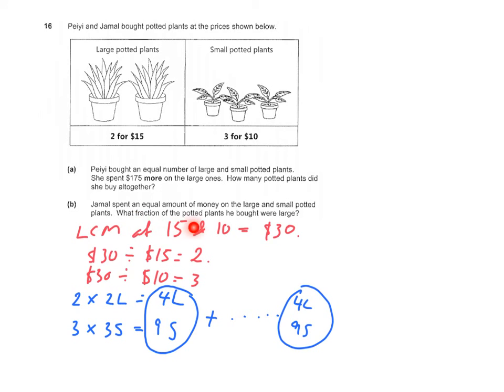So the fraction of potted plants that he bought that were large will be 4 out of the total, which is 4 plus 9, equals 13.